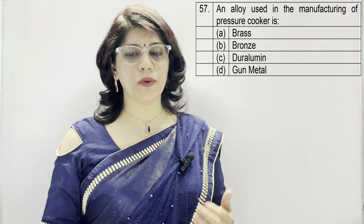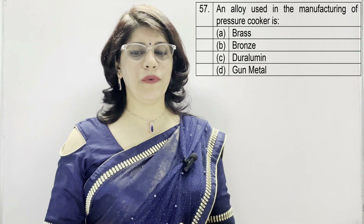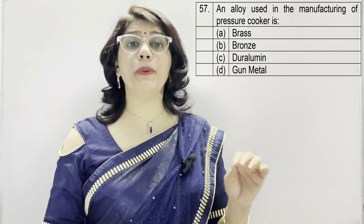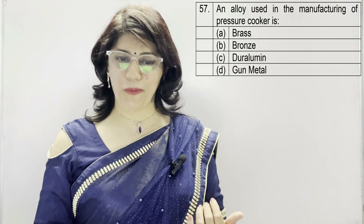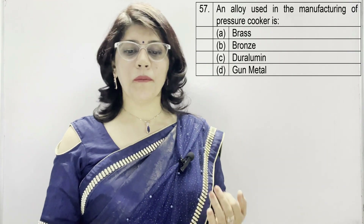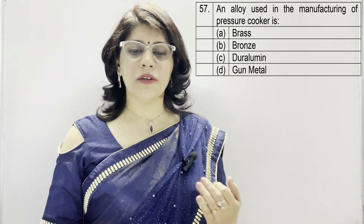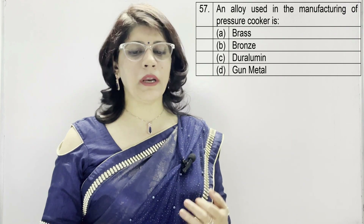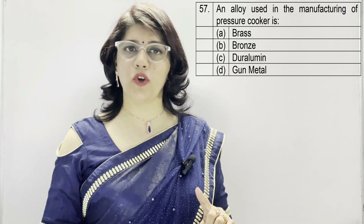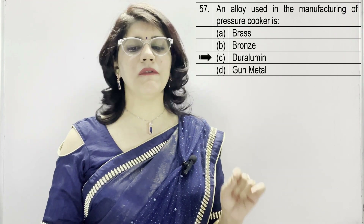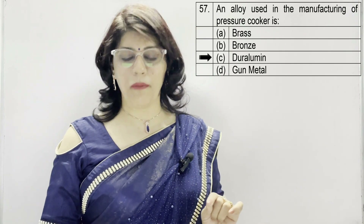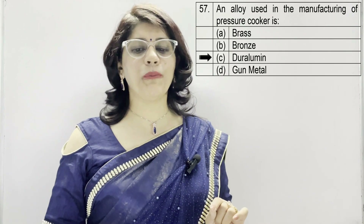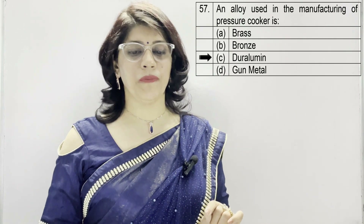In question number 57: an alloy used in the manufacture of pressure cookers is — A: brass, B: bronze, C: duralumin, D: gunmetal. The correct option is C — duralumin is used in the manufacture of pressure cookers.